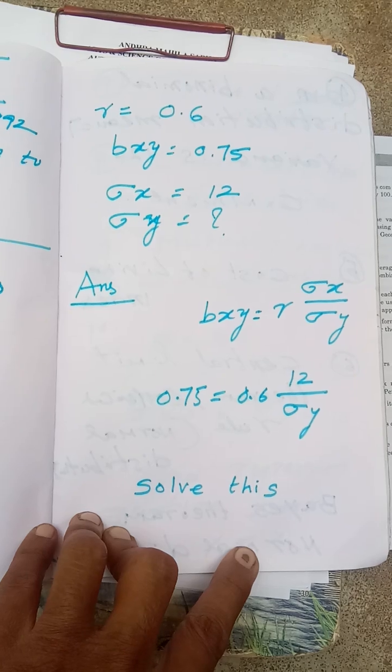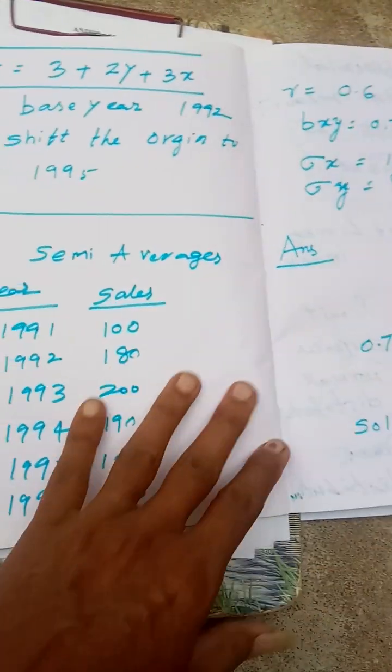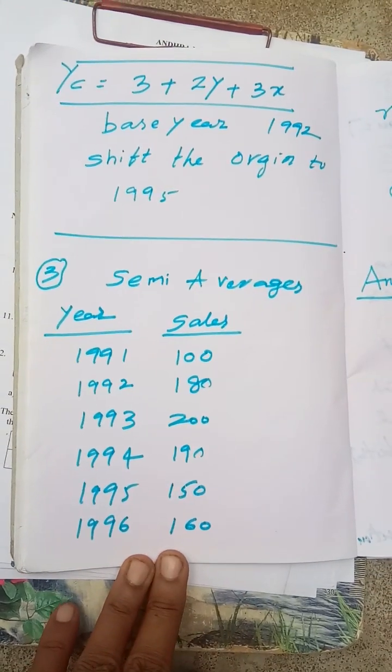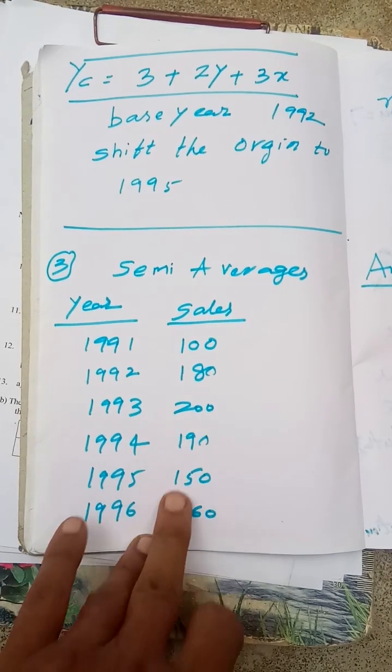See this and practice now. And have a look on parabolic trend equation also, and semi-average method may be given for short.